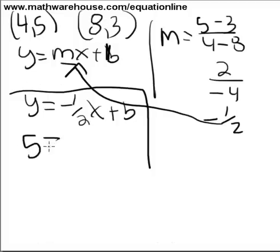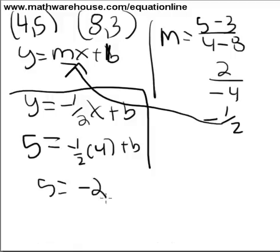Alright, so, just substituting in, 5 equals negative 1 half, 4 plus b. 5 equals negative 2 plus b. Solve for b.